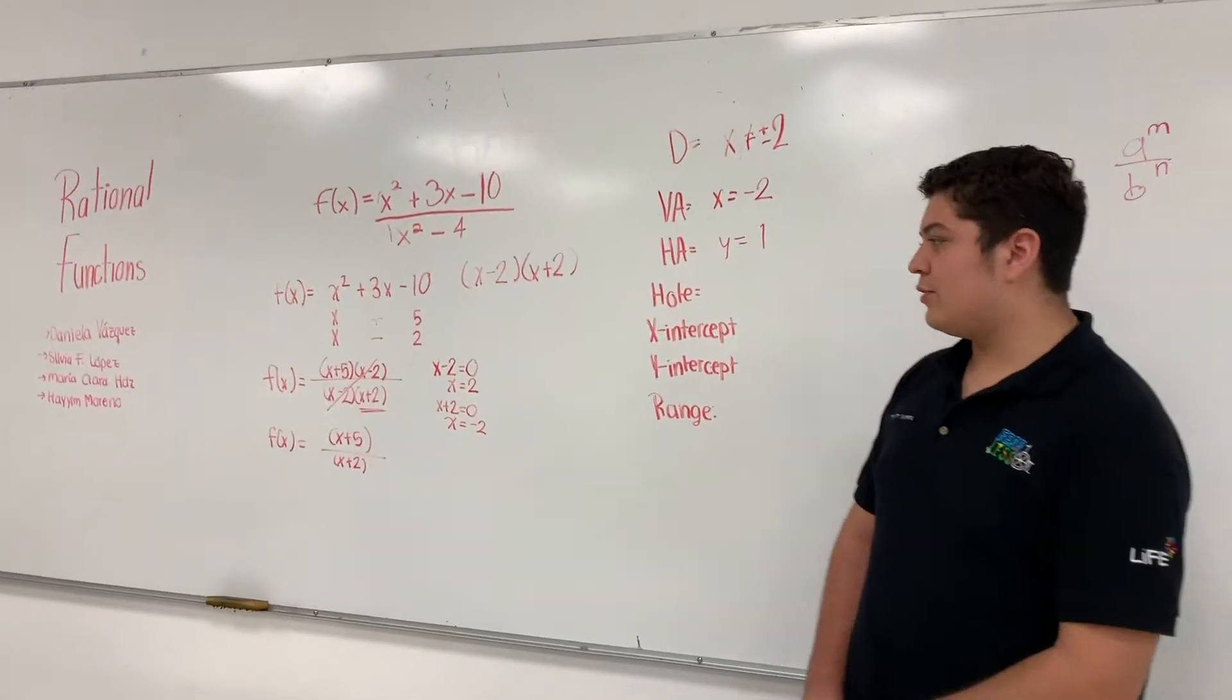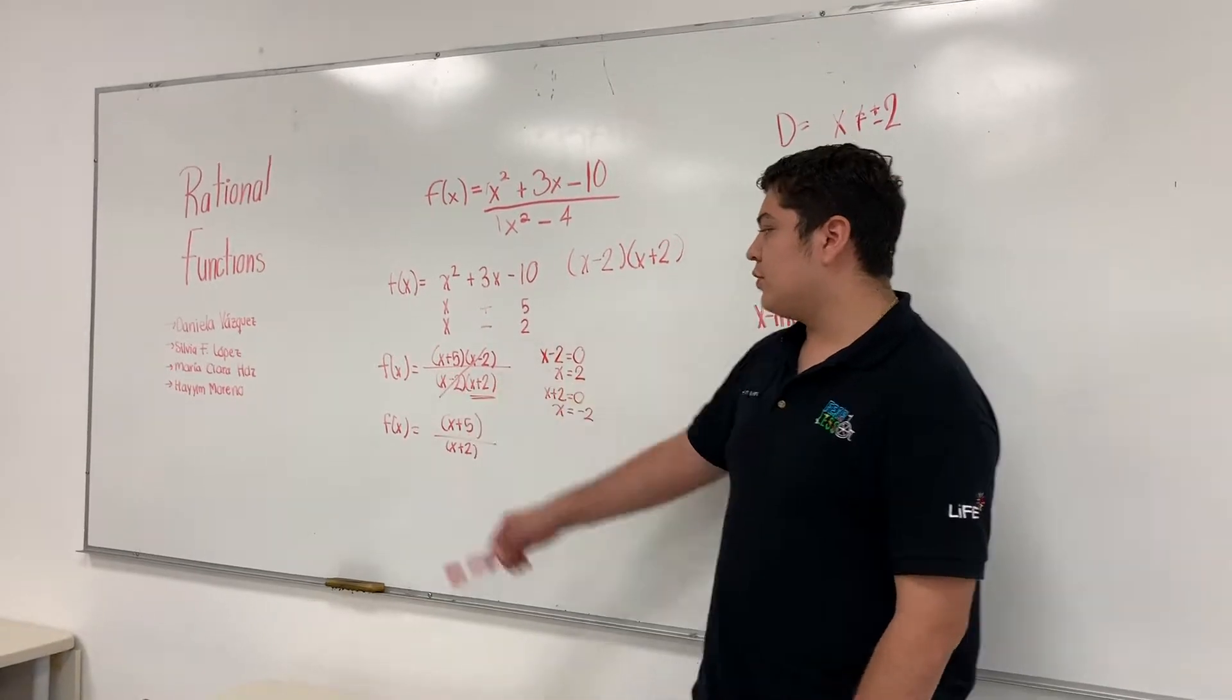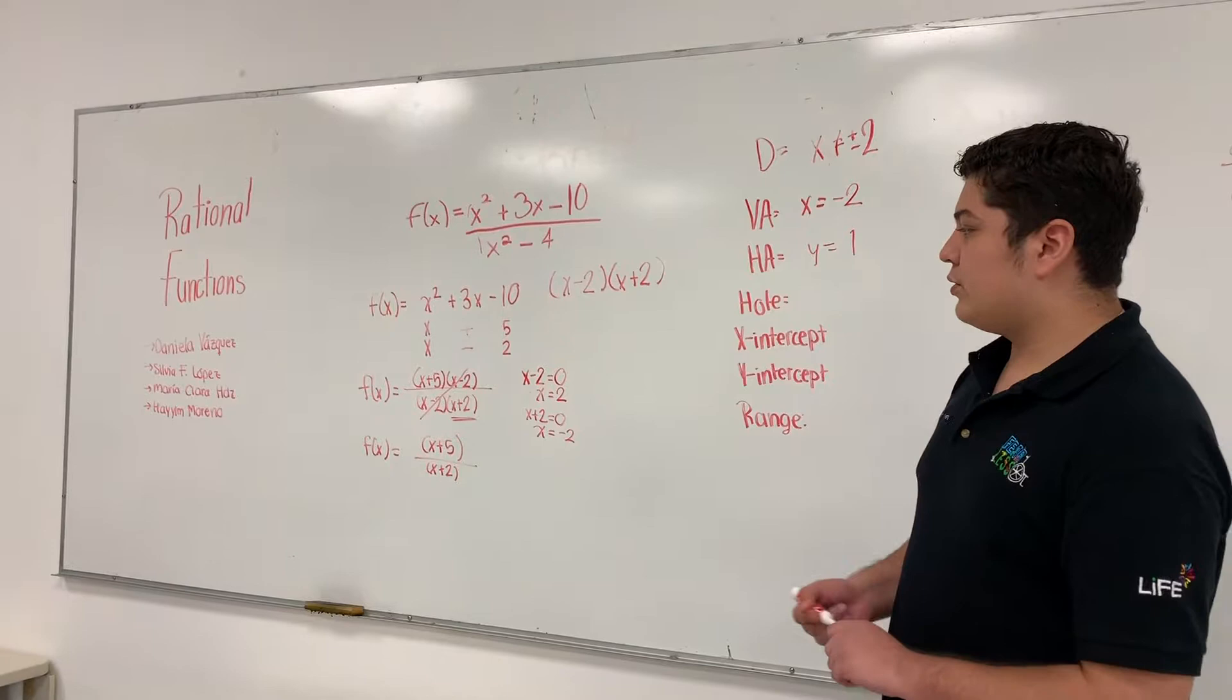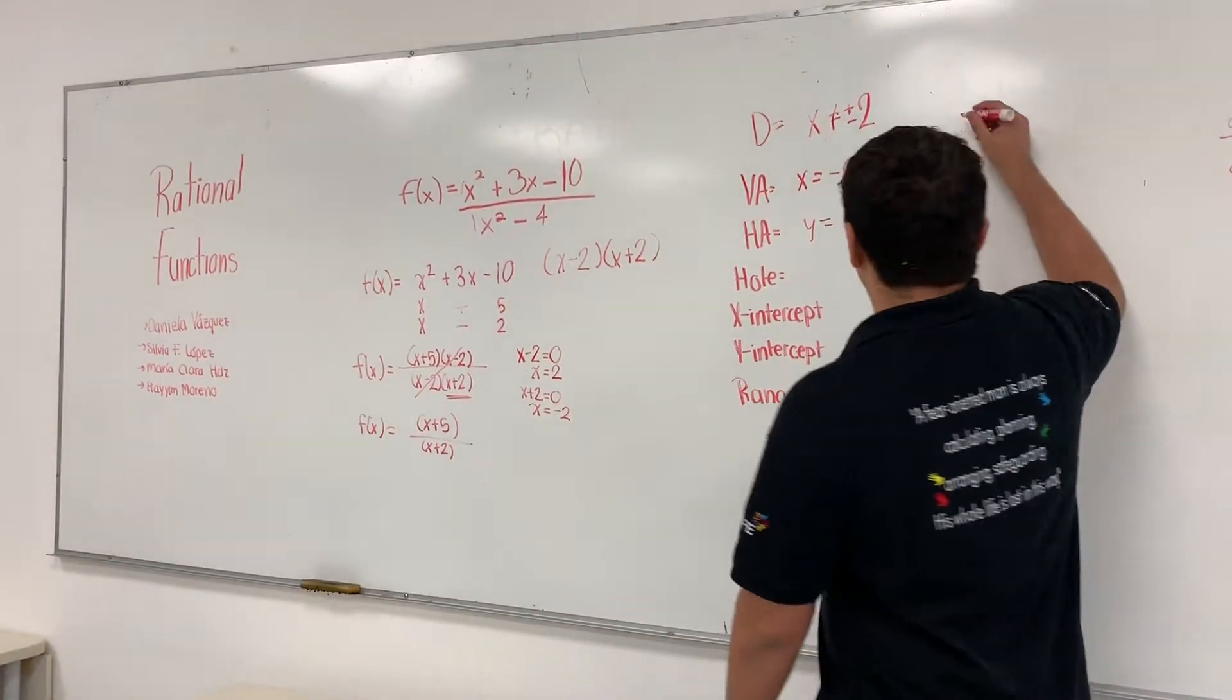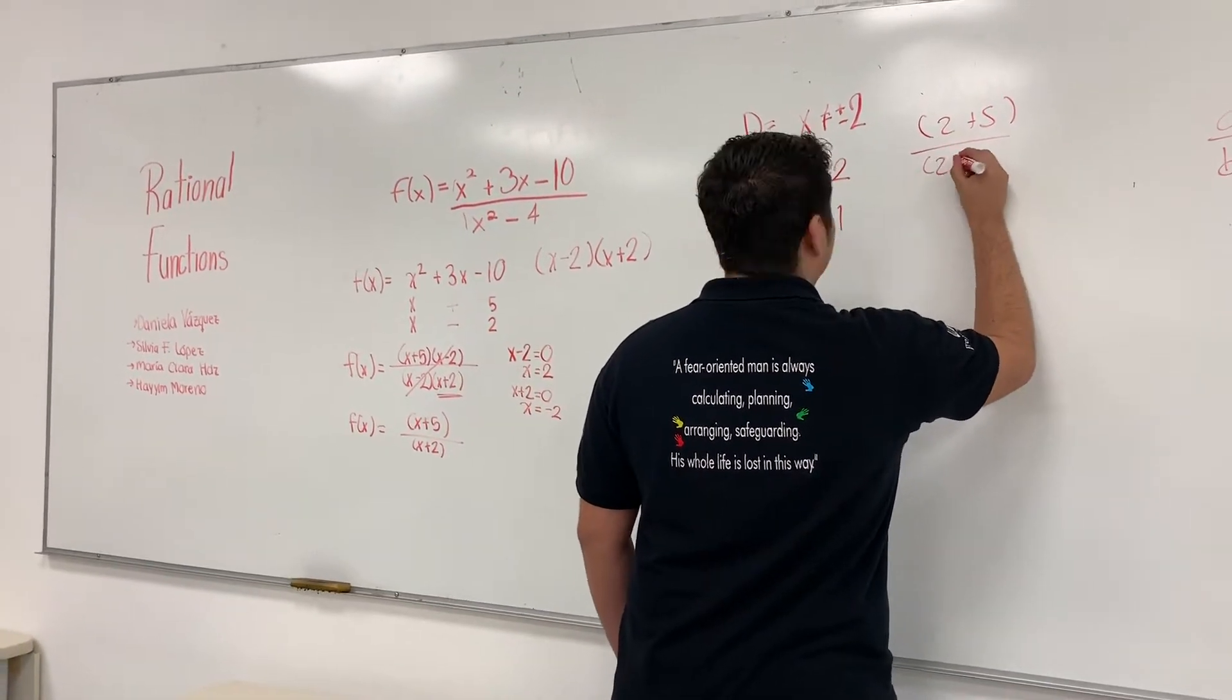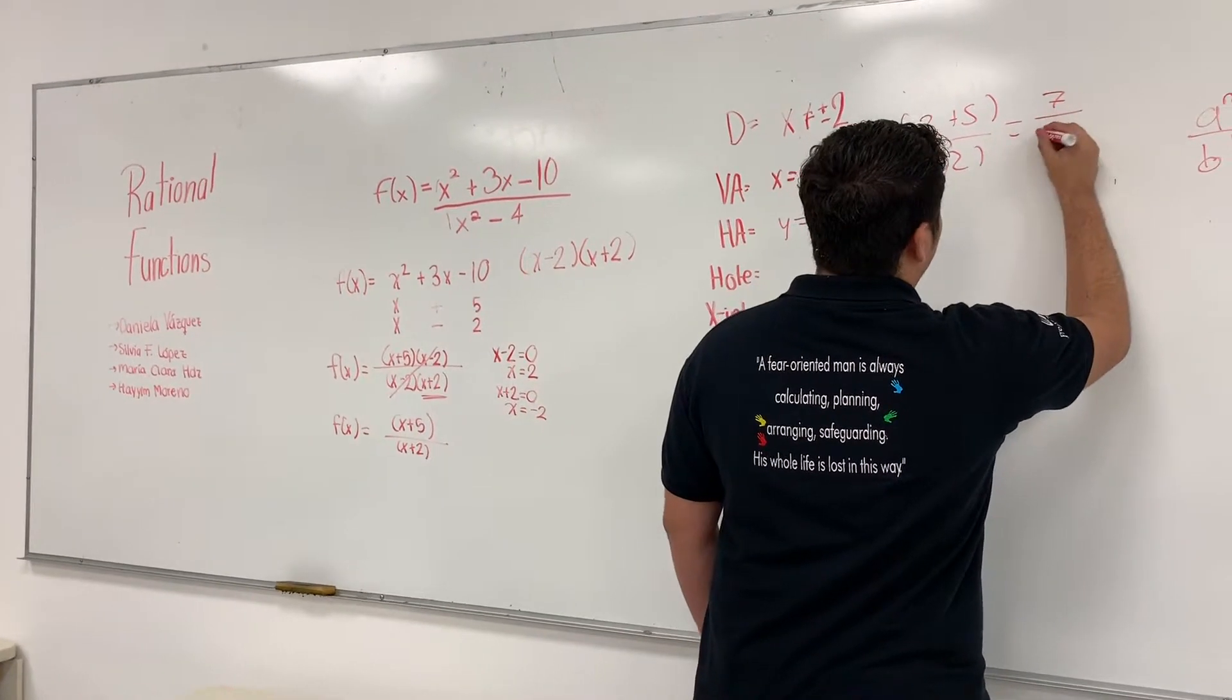For the hole, we need to use the expression that we cancel. In this case, it's x minus 2. So we solve for x and it's going to be 2. So we're going to substitute x with the number 2. In this case, it's going to be 7 over 4.